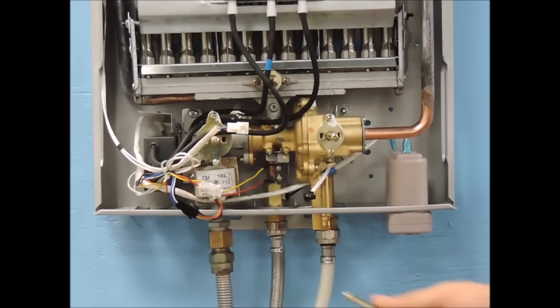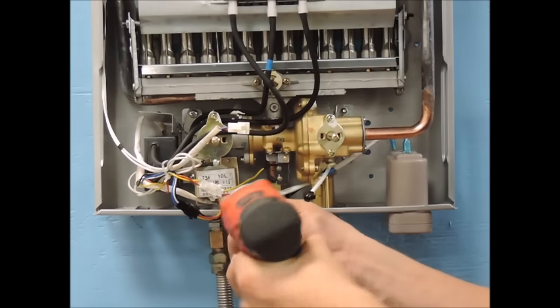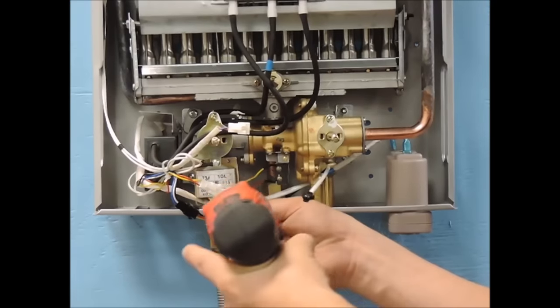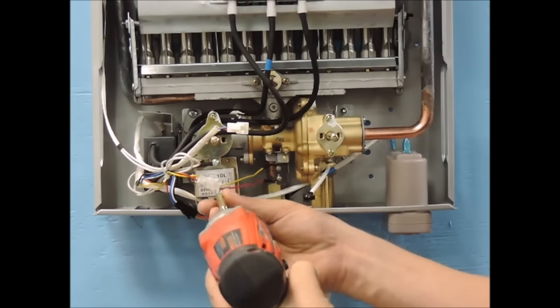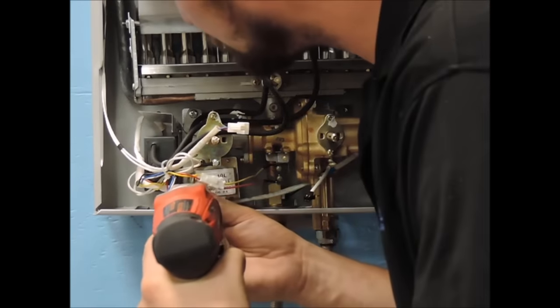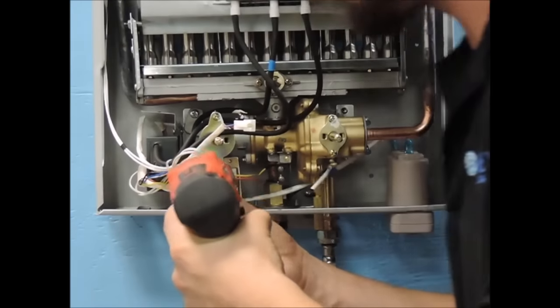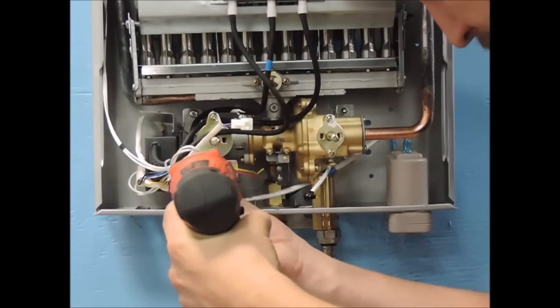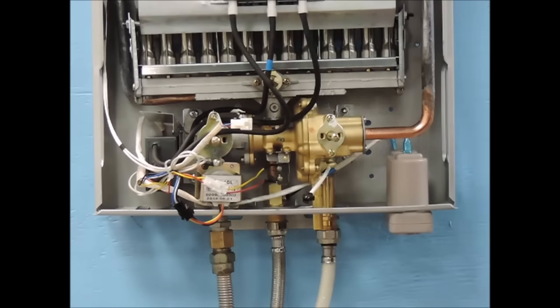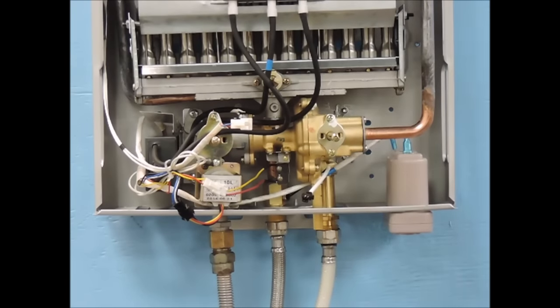Now, locate the gas solenoid. It will be located on the gas valve in the lower left hand corner. Next, locate the micro switch. It is a small black rectangle with 2 wires coming from the left hand side, located on the bottom side of the brass water valve near the bottom center of the heater.